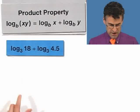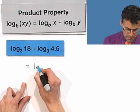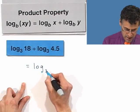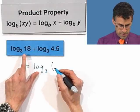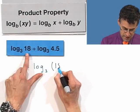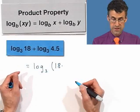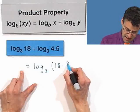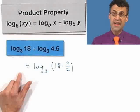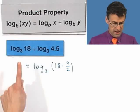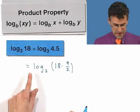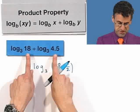That's the key. So in fact, this expression equals log base 3 of a product, namely the product of 18 times 4.5. 4.5 is 9 halves, so I'm going to write it as 9 halves. So check that out. That's a big deal, right? Here I got log of something plus log of something, and now I see it's log of the product of those somethings.